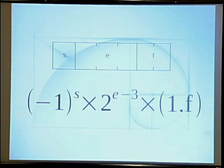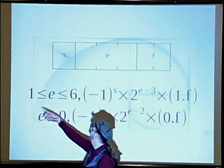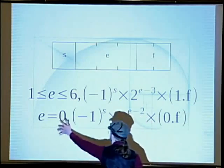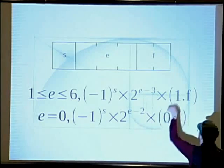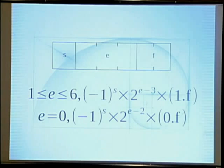If you do have subnormal floating point numbers, you get this state. Where if your exponent is between one and six, you use the equation I just showed you. Otherwise, if the exponent is zero, you have to change your bias thing and you change your one to zero. So that's the complication I talked about.